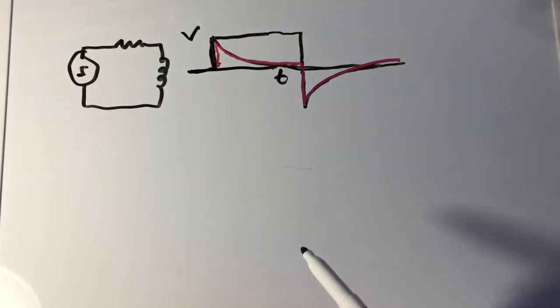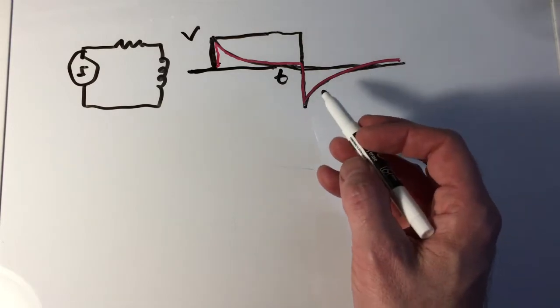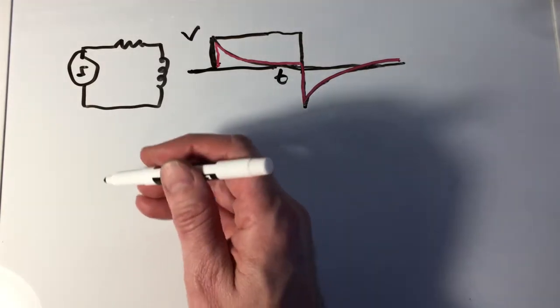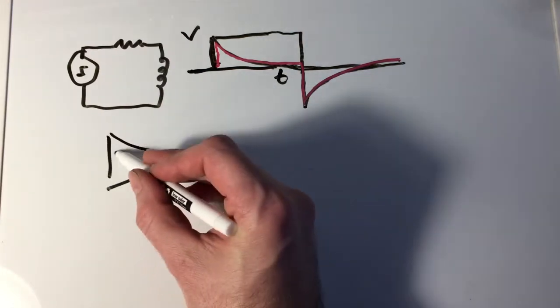So we could take advantage of that situation and say, okay, if we want to block DC but pass other frequencies, we could do something like connect our amplifier. Remember, we had our differential amplifier.